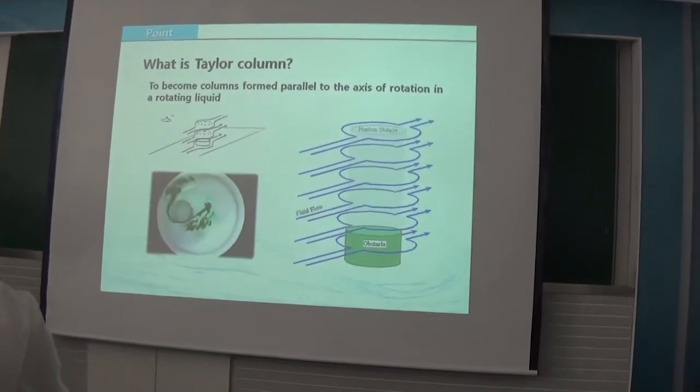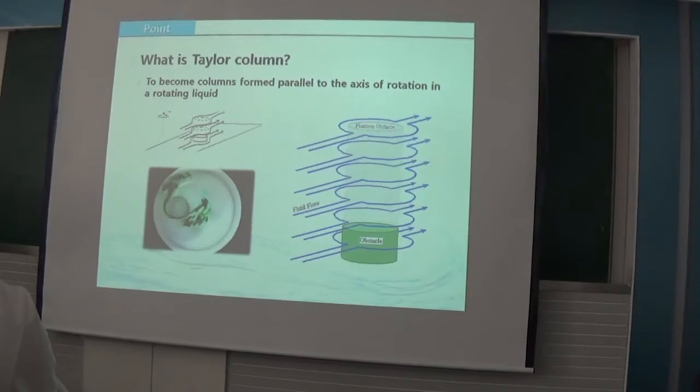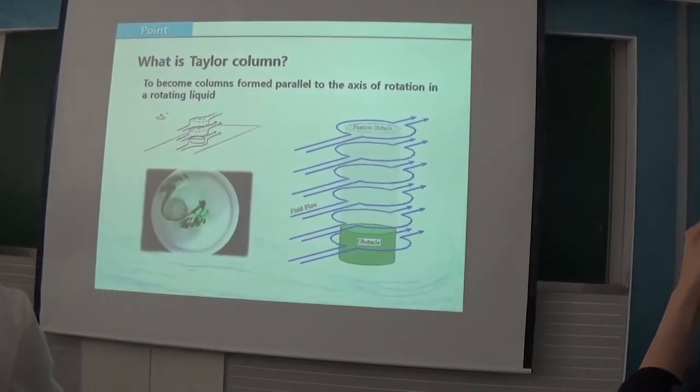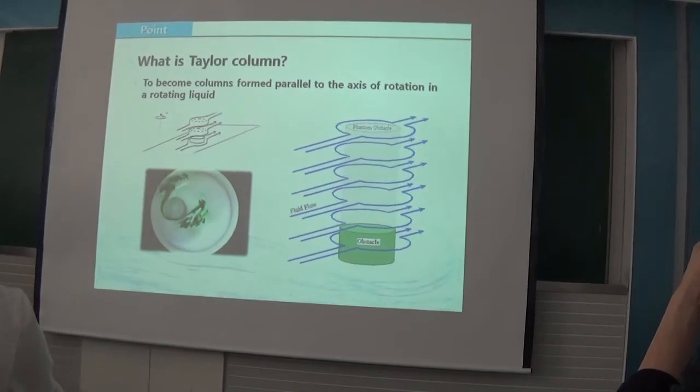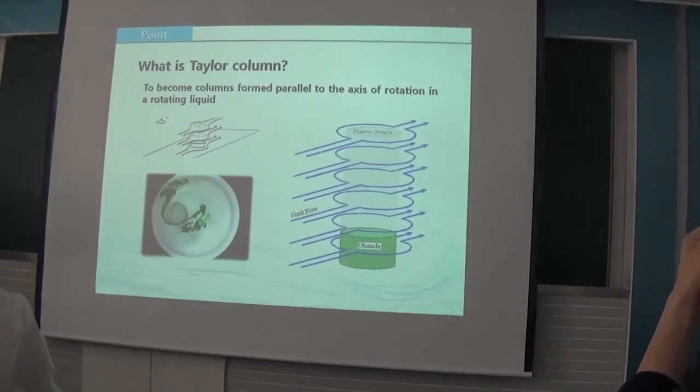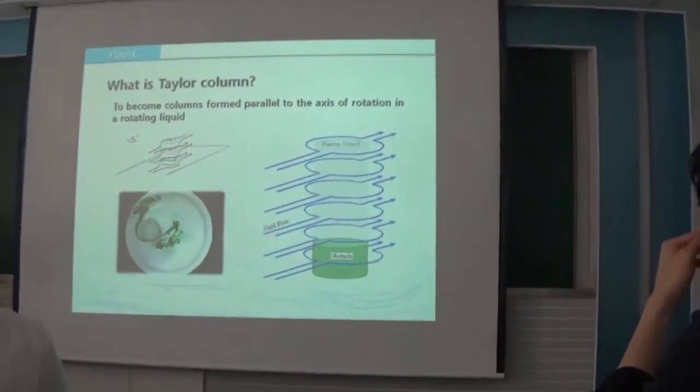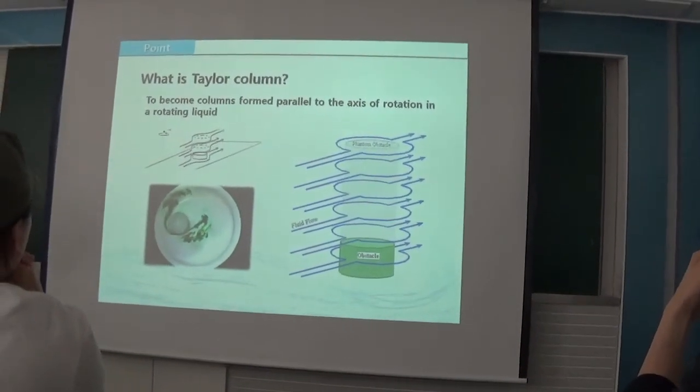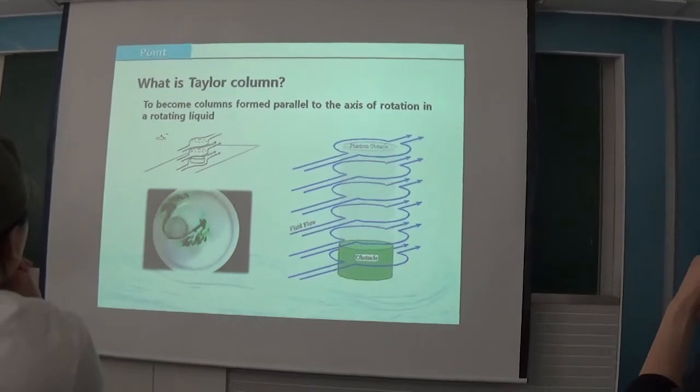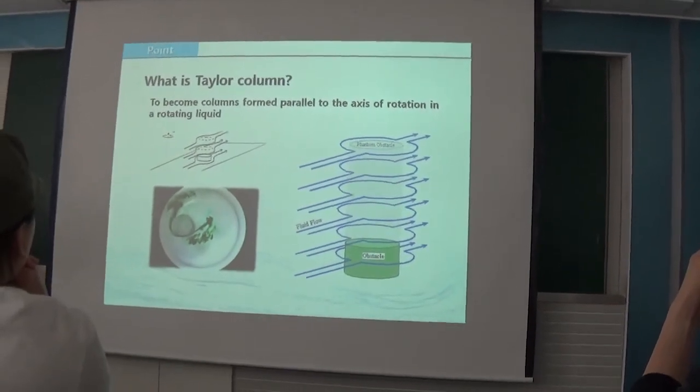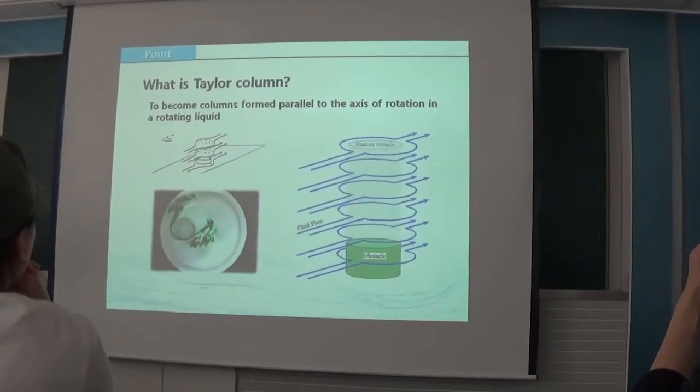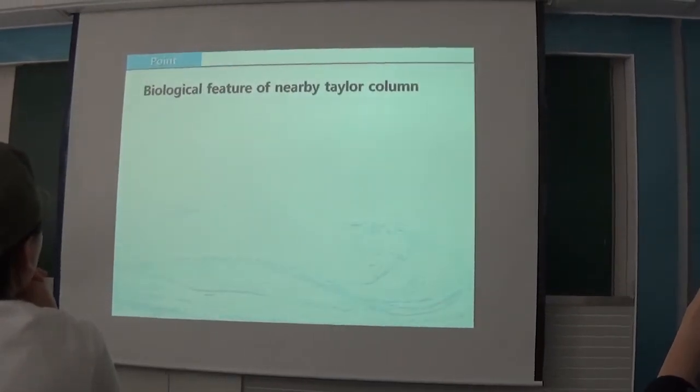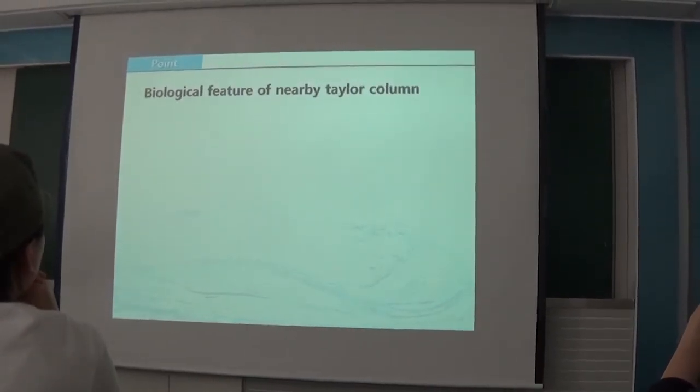A Taylor column is a column which has a tendency to go in parallel to the axis of rotation in rotating fluid. As you can see in this picture, movement bypasses on both sides when there are obstacles in the rotating fluid. The column formed on the top is called a Taylor column.